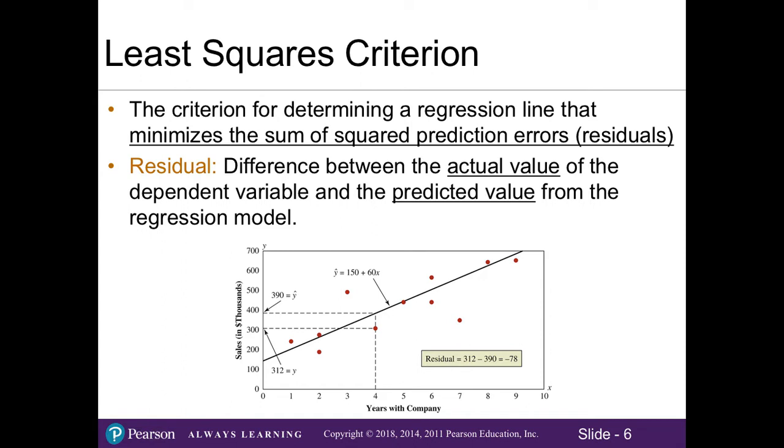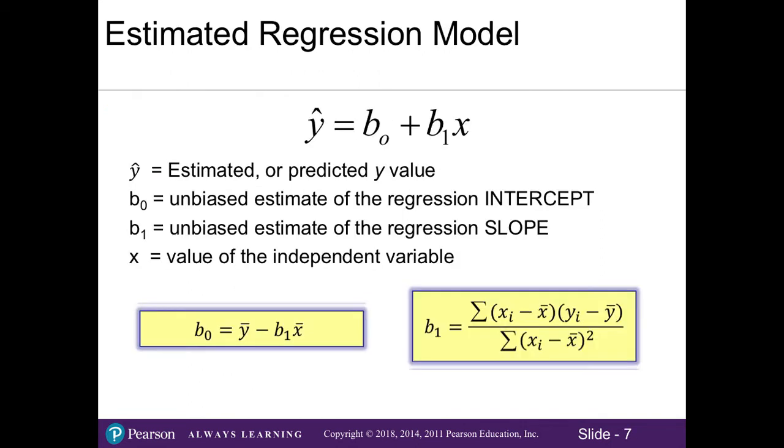Thanks to calculus, there are equations that let us find the slope and intercept estimates needed to develop our regression model. Since we can't study the entire population, we have to use an estimated regression model based on sample data. Our formula gets simplified down to the pieces we will use. This ŷ with a little hat over it is our predicted y value. Our β₀ is now a lowercase b₀, which represents our intercept, here's the formula on the left. Our b₁, or our slope, this is the formula over here to the right.